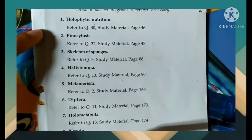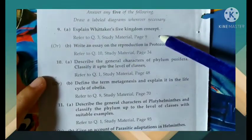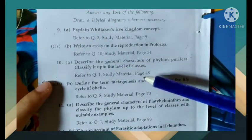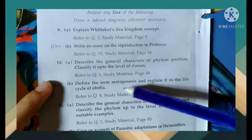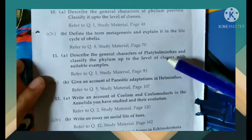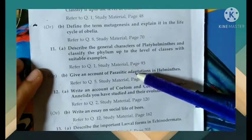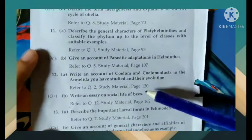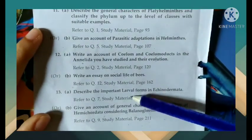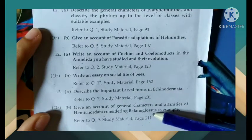Section B has 5 questions. Write an essay on reproduction in Protozoa. Describe the general characters of phylum Porifera. Define metagenesis and explain the life cycle of Obelia. Describe the general characters of Platyhelminthes and classify the phylum up to class with suitable examples. Topics also include parasitic adaptation in helminths, coelom and coelomoducts, social life of bees, important larval forms in Echinodermata, and general characters of Hemichordata with Balanoglossus as example.